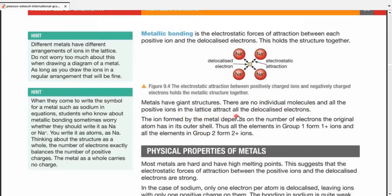All the positive ions in the lattice attract all the delocalized electrons. So the number of electrostatic forces of attraction are literally uncountable. The ion formed by metal depends upon the number of electrons the original atom has in its outer shell. Thus, all the elements in group 1 lose one electron each to form positive 1 ions, and all the elements in group 2 lose two electrons each forming two positive ions.